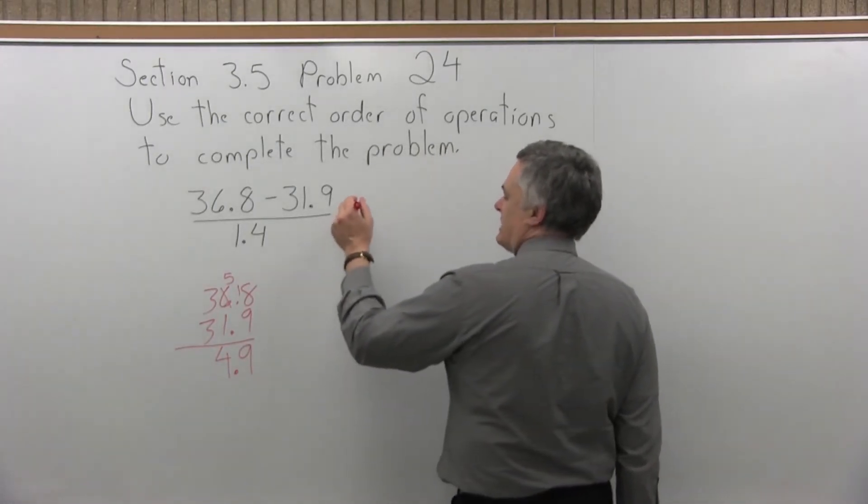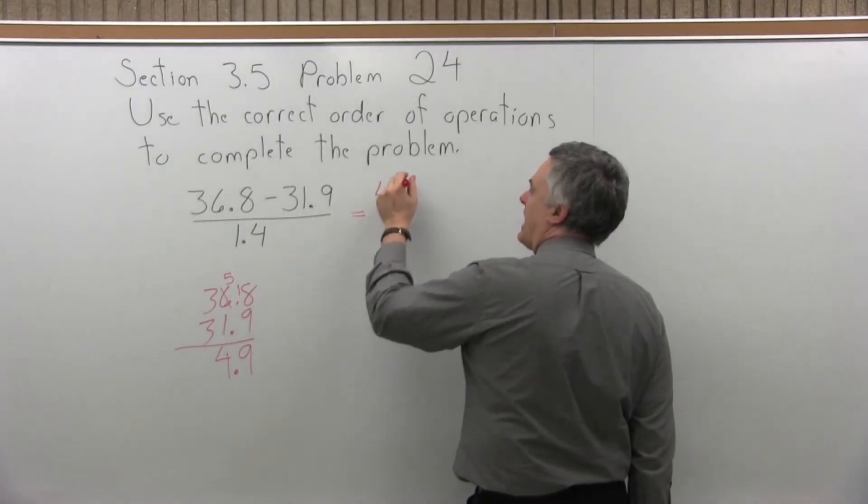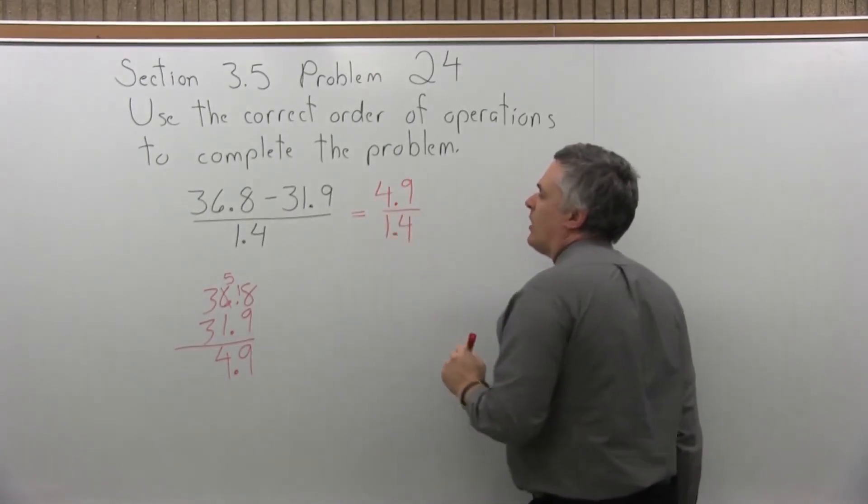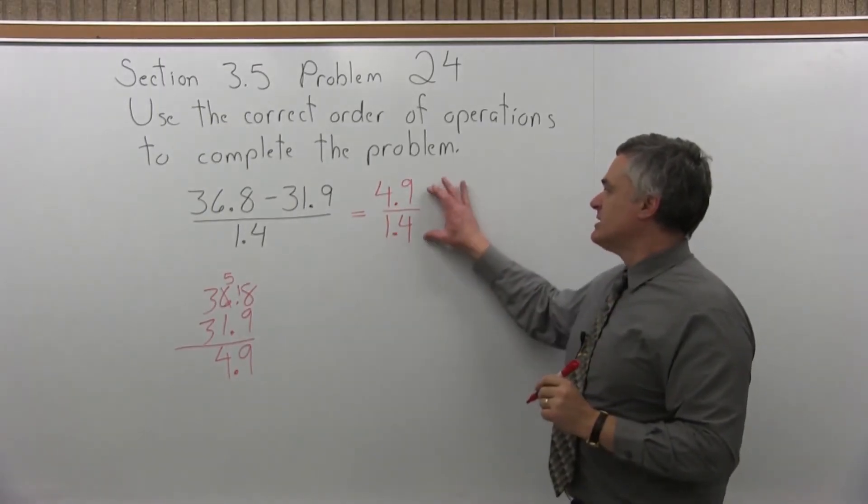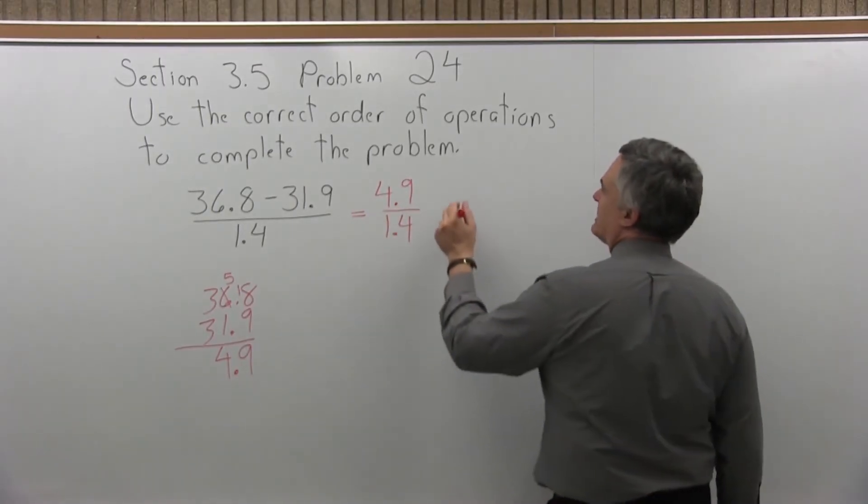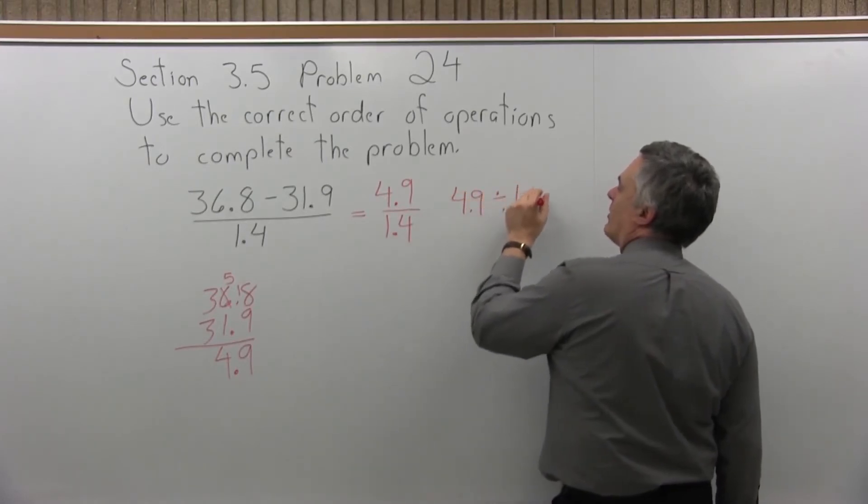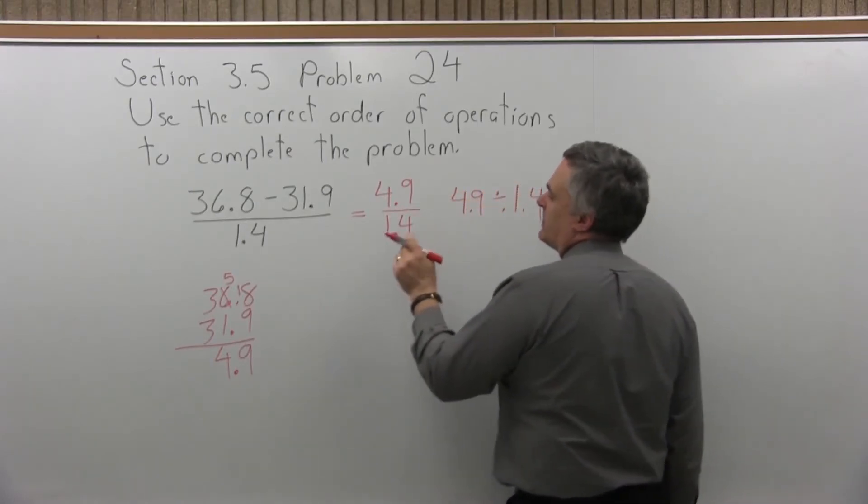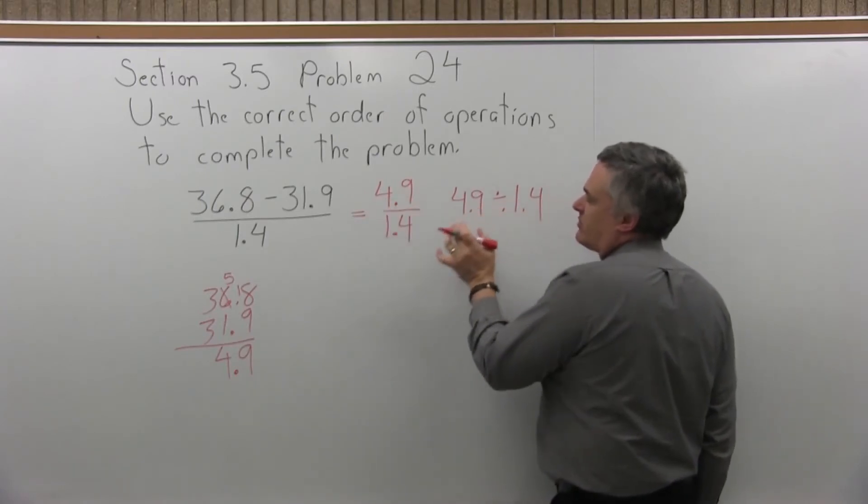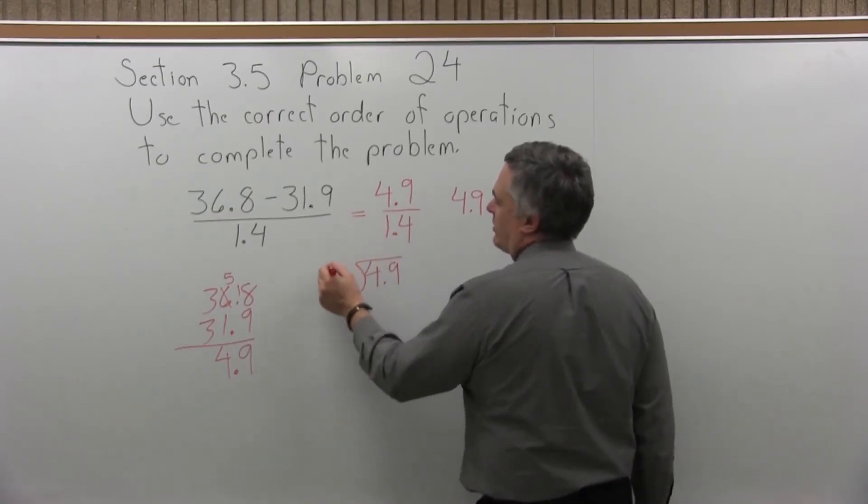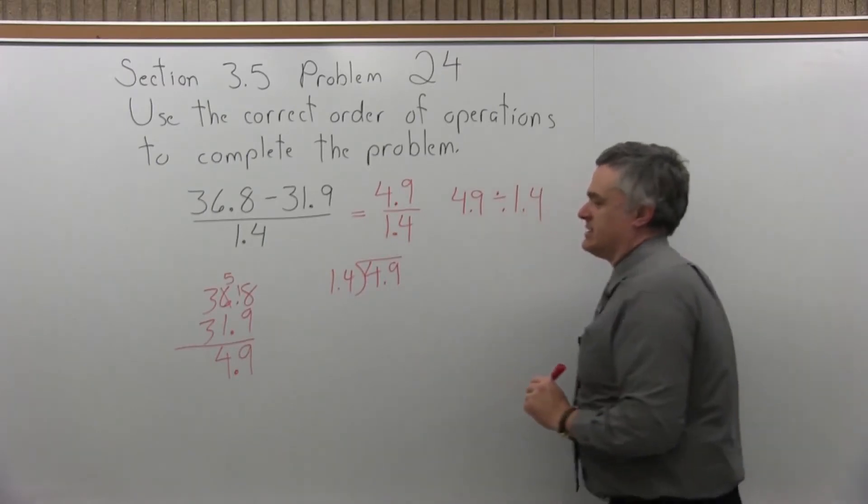So that fraction is now 4.9 over 1.4. Well, when you have a fraction, this is really like a type of division. What we're saying is 4.9 divided by 1.4. So with a calculator, we could enter it this way, but really to do it by hand, you have to put the 4.9 under a division symbol and the other number 1.4 in front of the division symbol.